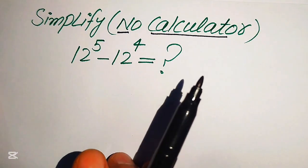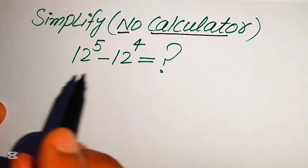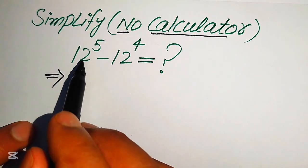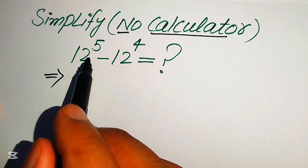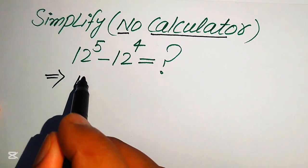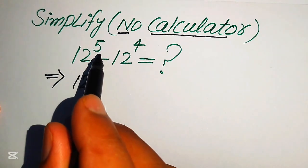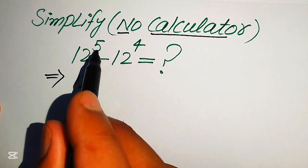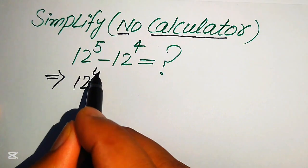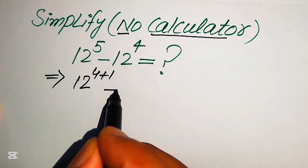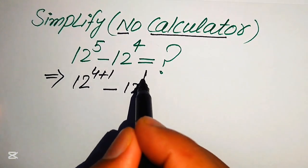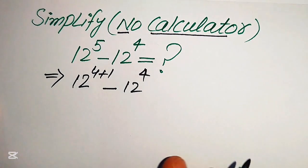The very first step is to focus on the exponent of the first term. We have 12 to the power of 5, and we rewrite this 5 as 4 plus 1, minus 12 to the power of 4.